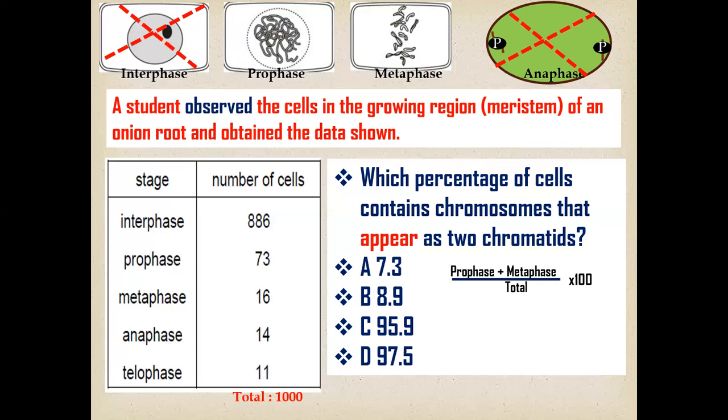We can apply this formula to calculate the percentage of cells: prophase plus metaphase divided by total multiplied by 100. That's 73 of prophase and 16 of metaphase divided by 1000 multiplied by 100. This will give us 8.9%.